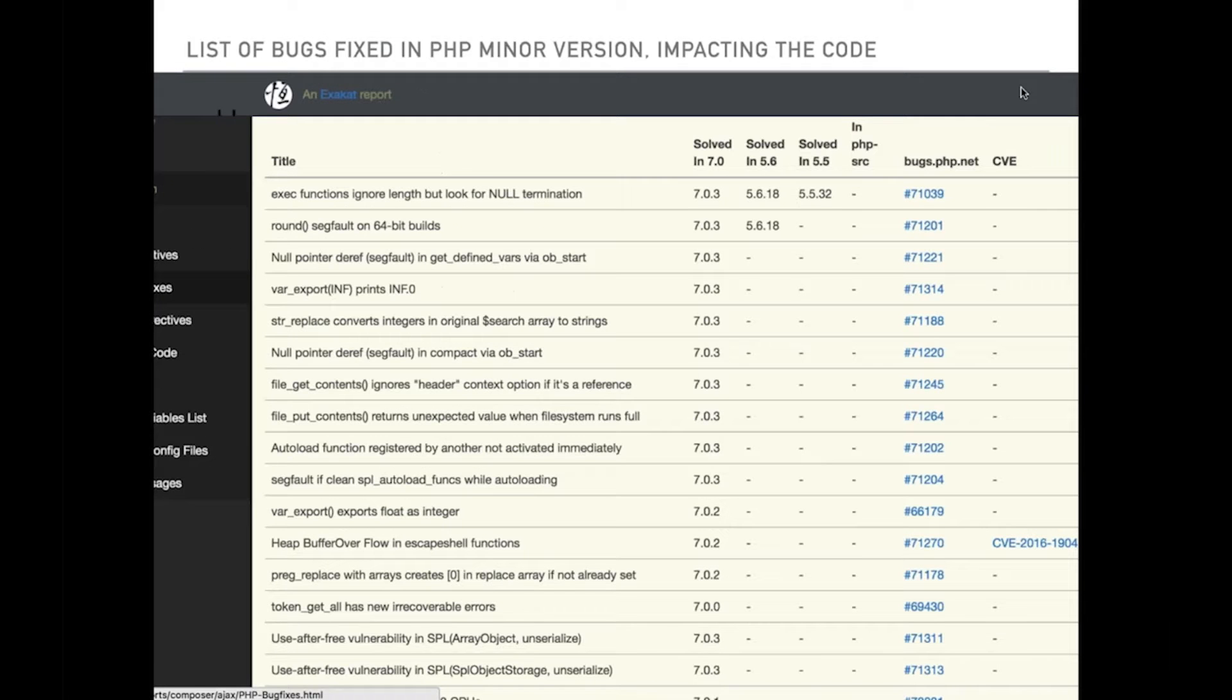Another one here is the list of bug fixes. So, every time there's a PHP minor version, the static analyzer is able to take a look at the code, see which of the functions are being used in the code, are they impacted in the new version, and then you have a full detail of what could impact your code. So, that's all automated and very interesting to us.